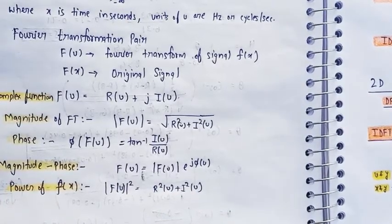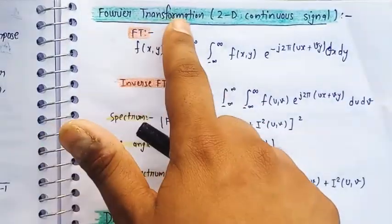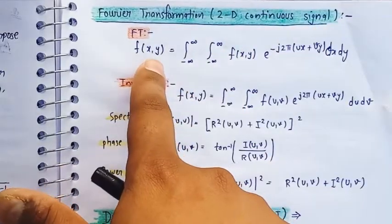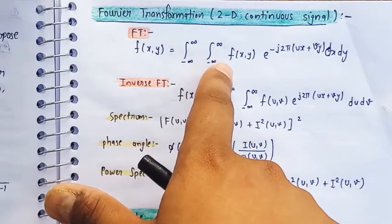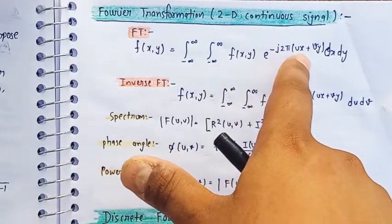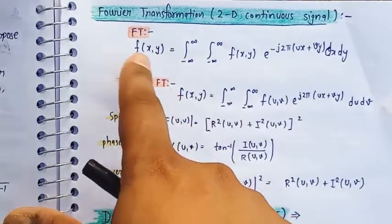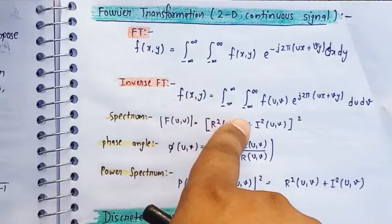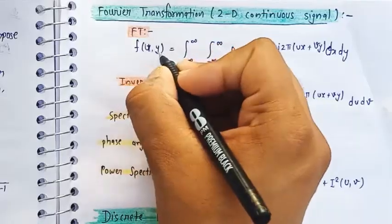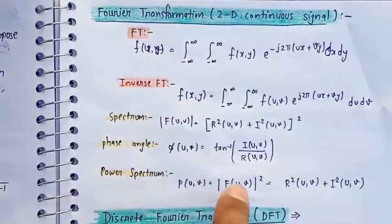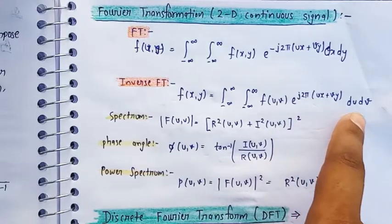Now I will discuss in the form of 2D. How we will represent 2D Fourier transformation? Let's see in a continuous signal. In a Fourier transformation 2D continuous signal, there are two variables x and y, so there are two integrations: F of x comma y, e to the power minus j 2 pi (ux plus vy) dx dy. In inverse, it will be opposite: F of x comma y equals integral of F of u comma v, e to the power j 2 pi (ux plus vy) du dv.